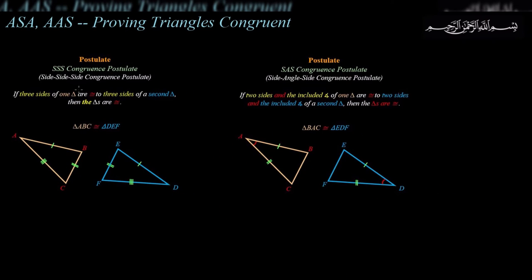Previously I talked about the side-side-side triangle congruence postulate and the side-angle-side triangle congruence postulate. Today we shall continue proving triangles congruent. As I suggested before, you can prove triangles to be congruent by definition — if you can prove that two triangles have all sides congruent and all corresponding angles congruent. Any polygon is congruent if and only if all corresponding sides and angles are congruent.